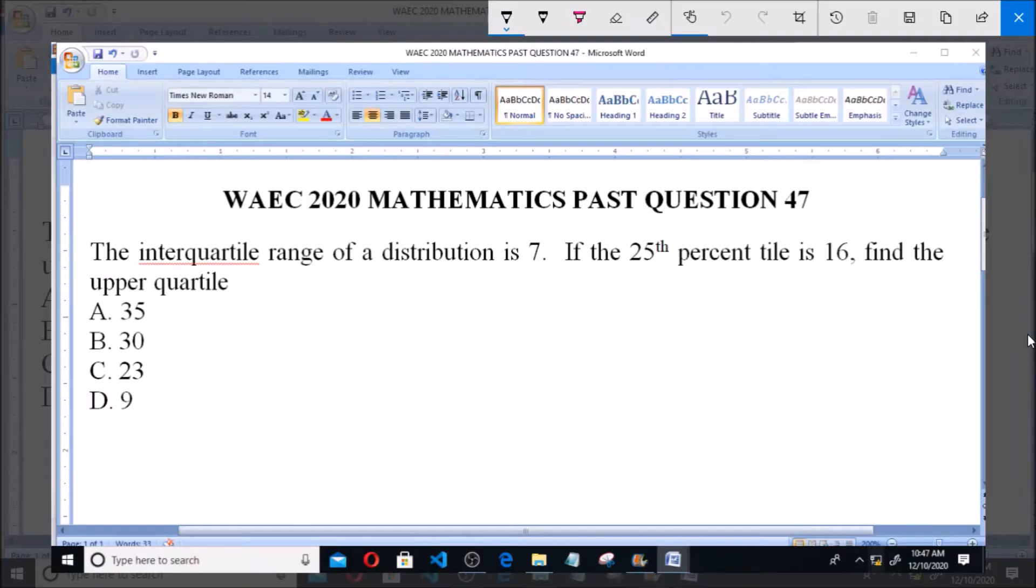Good day and welcome. I will be answering WAEC 2020 Mathematics past question 47. The interquartile range of a distribution is 7. If the 25th percentile is 16, find the upper quartile.